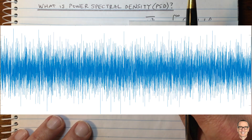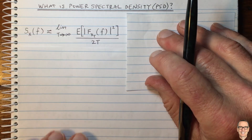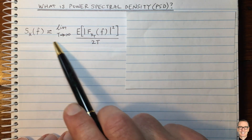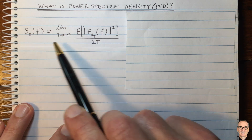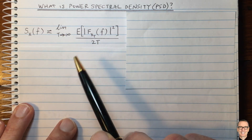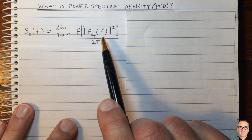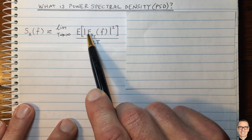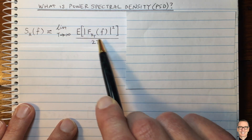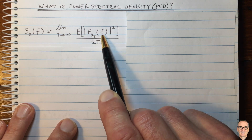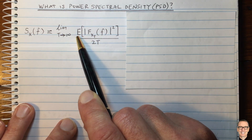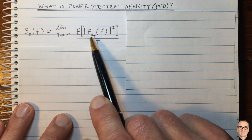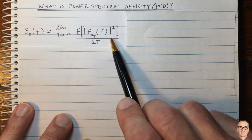So instead we're going to define something else — something called the power spectral density. Here's a definition of that; I'll come back to it in just a minute. But first, let's look at some of its characteristics. It's in the frequency domain. It involves this function F — capital F — which is a function of frequency. And then we're going to take an expected value of it, which is like taking the average. So that is what we're talking about here, but in a more formal way.